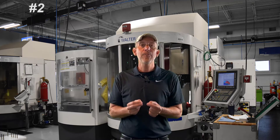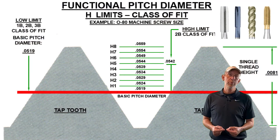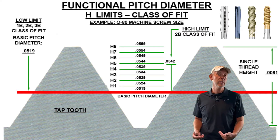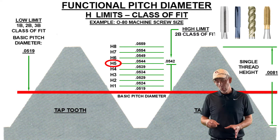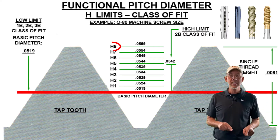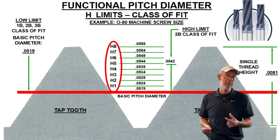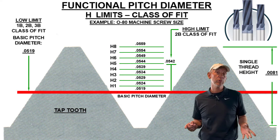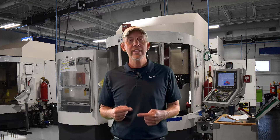With a threadmill you can make a full thread depth with one tool. A tap comes with thread limits — you can't make it cut oversize or undersize; it comes with a limit, usually called an H limit. If you want your hole a little bit oversize or want the tap to last longer, you have to buy a different tap. With a threadmill, you can make any size hole, any dimension, any thread limit you want with the same cutter. You can go to 100% thread — a huge advantage.